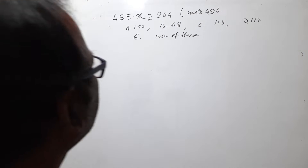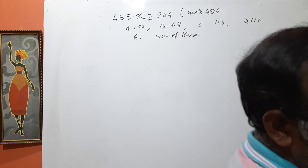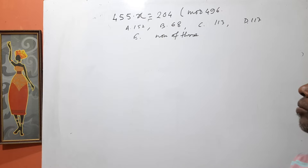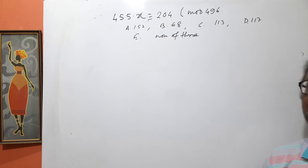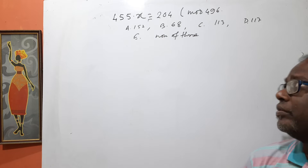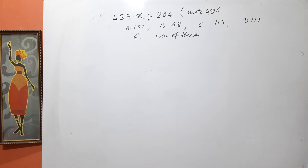Welcome to my channel. This is problem number 3, given to me on Facebook for solution. The problem is: 455 times x is equivalent to 204, divided by modulo 496. What will be the value of x? The alternative options given are: first option 152, second option 68, third option 113, fourth option 117.